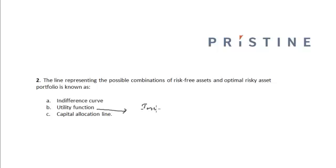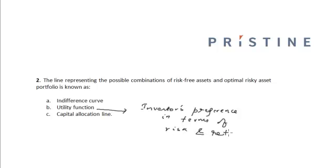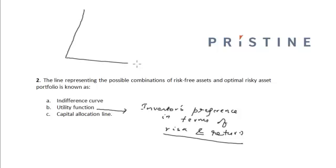The utility function reflects the investor's preference in terms of risk and return, and the indifference curve represents the plot of combinations of risk and return for which an investor is indifferent. Let us plot risk — measured by standard deviation — on the x-axis and expected return on the y-axis.